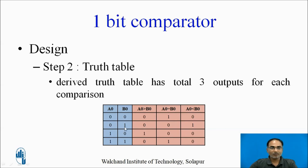The first case is where a0 and b0 are both 0 and equal, so the a0 equals b0 output is 1, and the remaining outputs are 0. Next, when a0 is 0 and b0 is 1, b is greater than a, so a0 less than b0 output is 1. Third case: a is 1, b is 0, so a is greater than b — a equals b and a less than b are both 0. Last case: a and b are both 1 and equal, so a equals b output is 1 and the remaining outputs are 0.